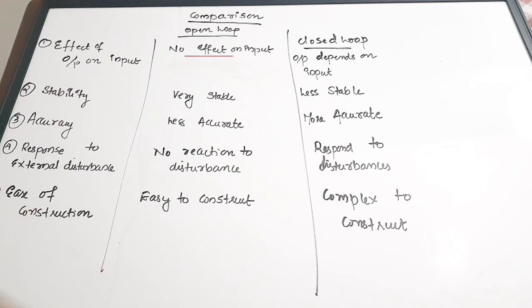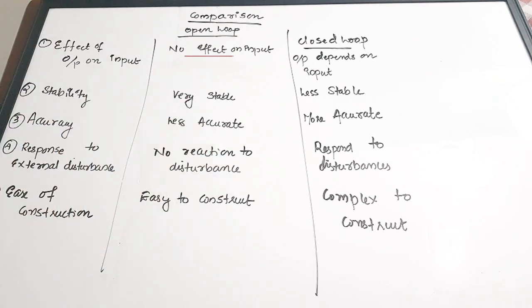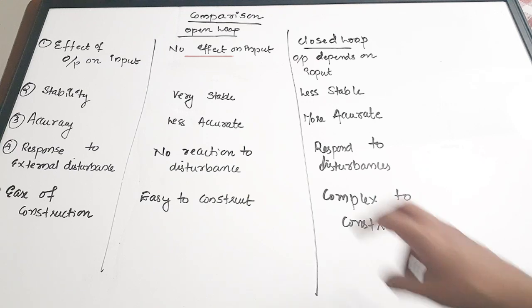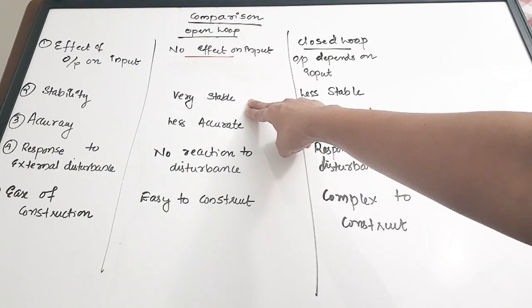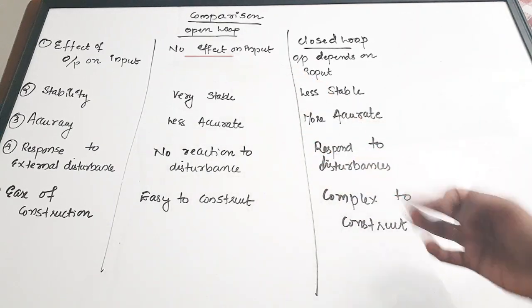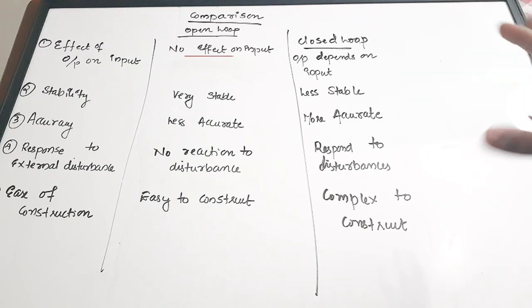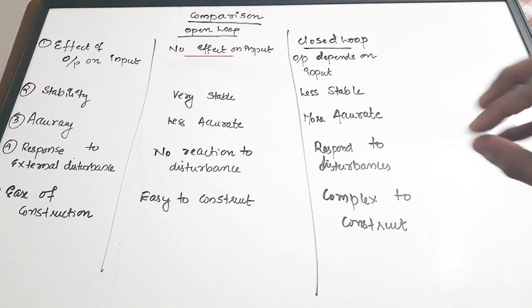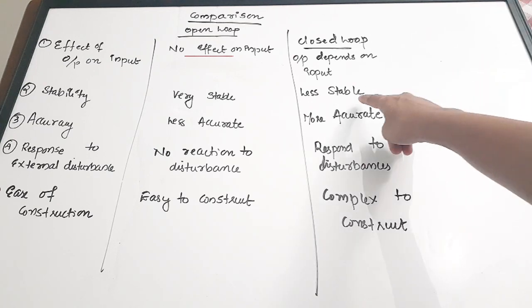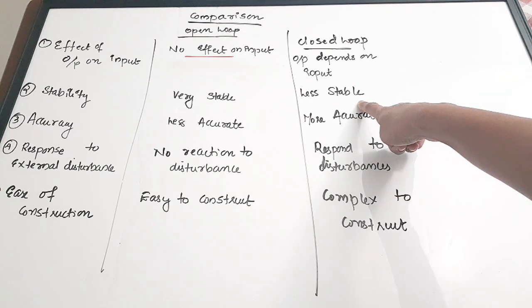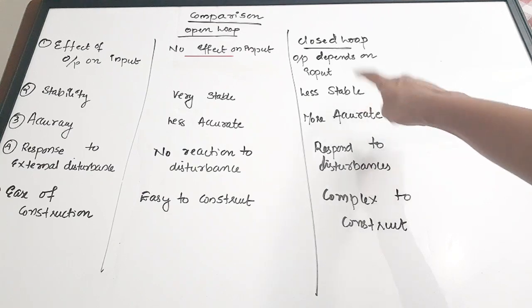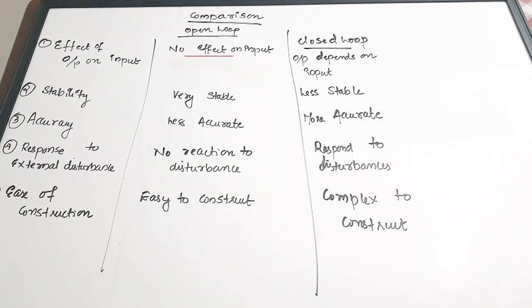The second point is stability. Open loop control systems are very stable, whereas closed loop control systems are less stable. Open loop systems are simple in construction and are not much affected by external disturbances, making them more stable. Closed loop control systems have less stability.